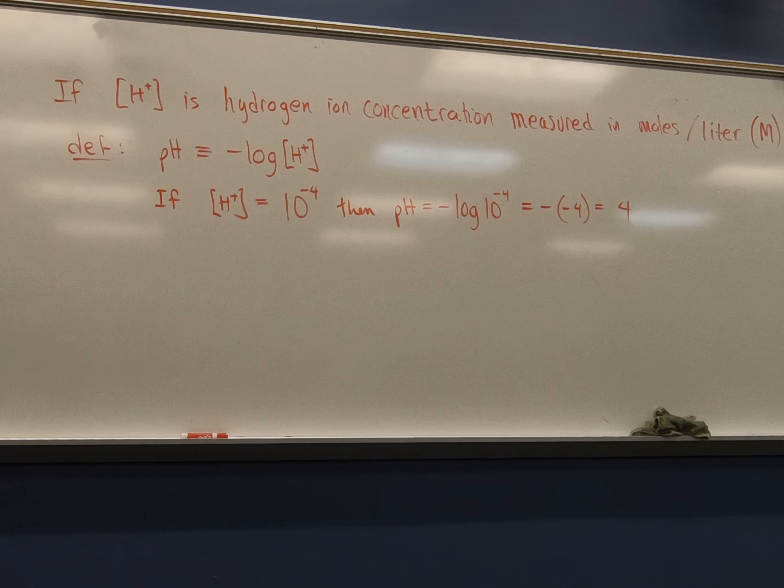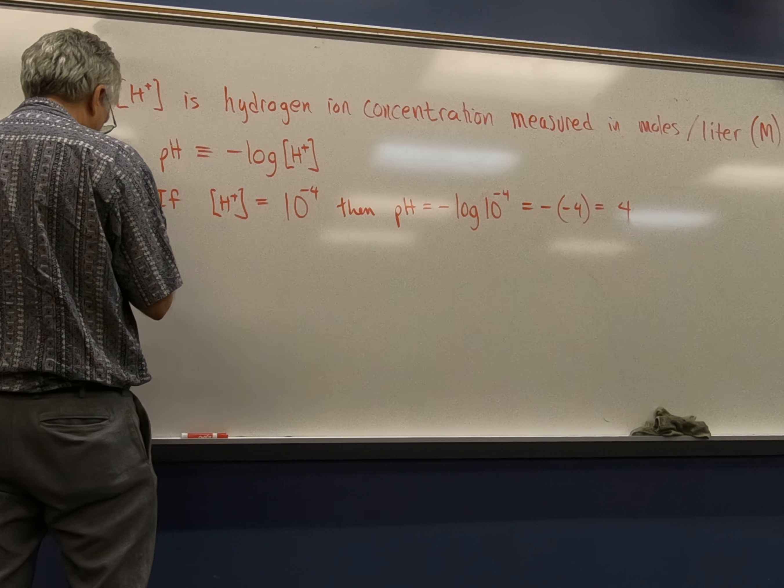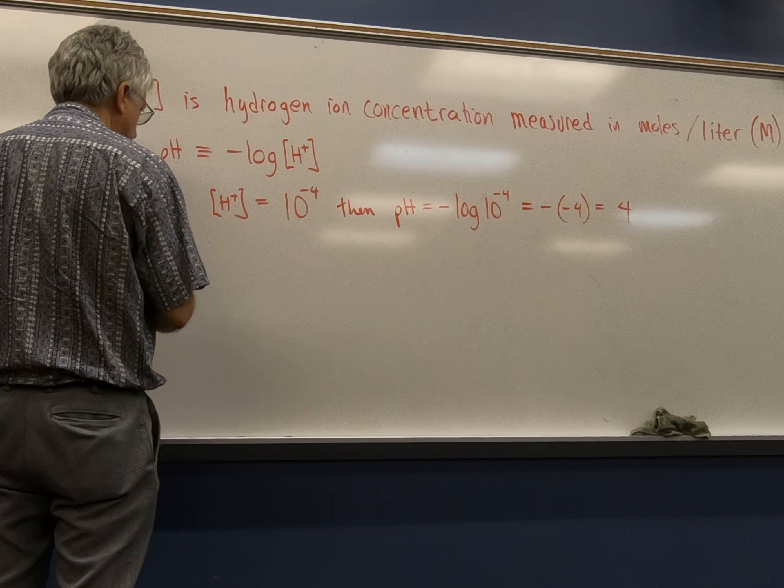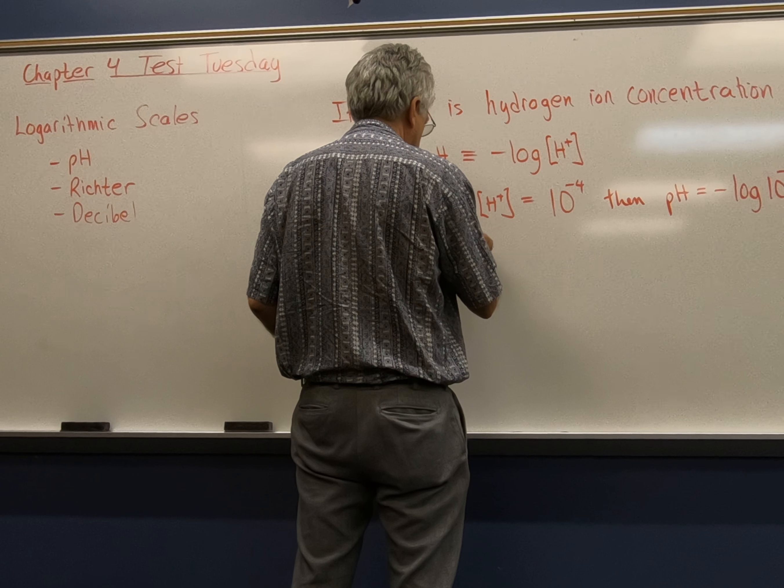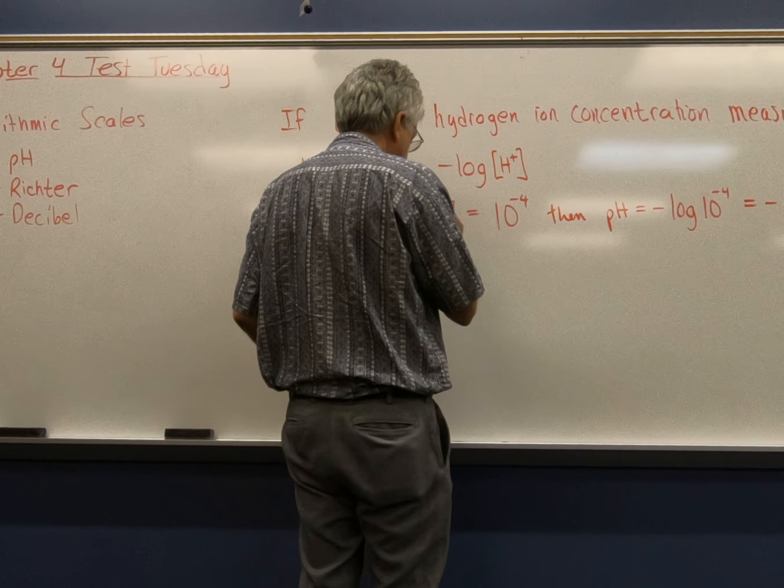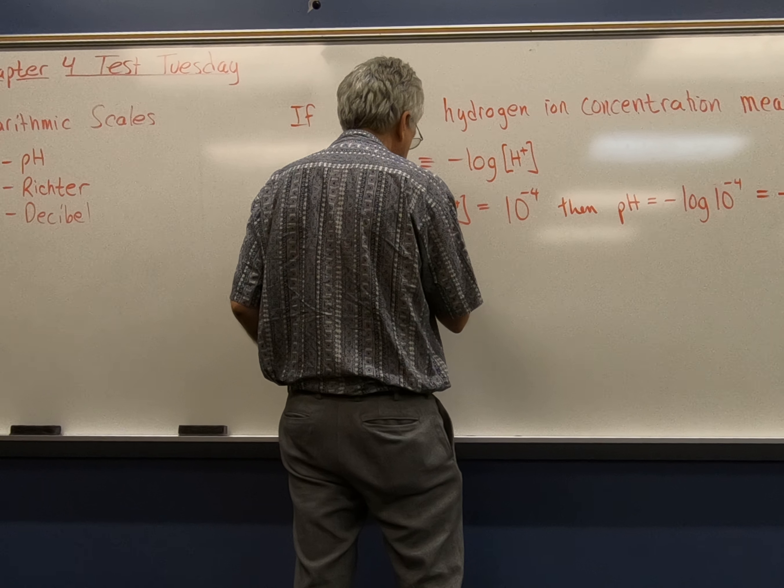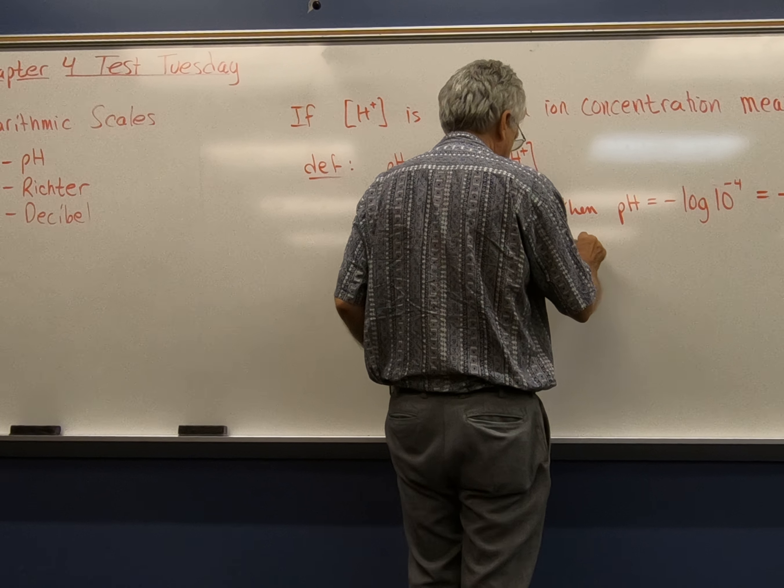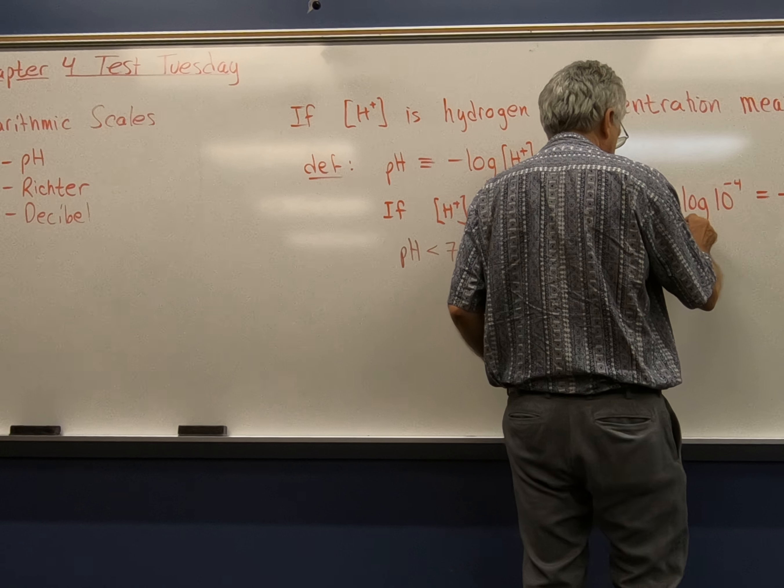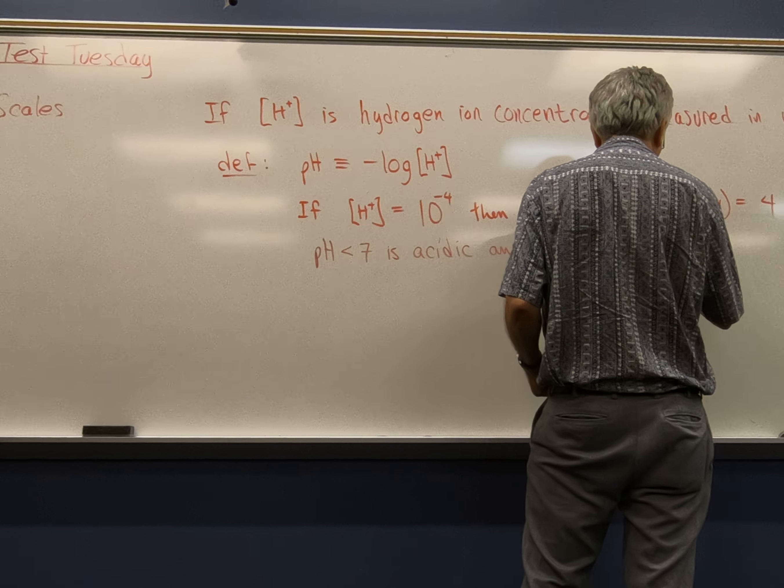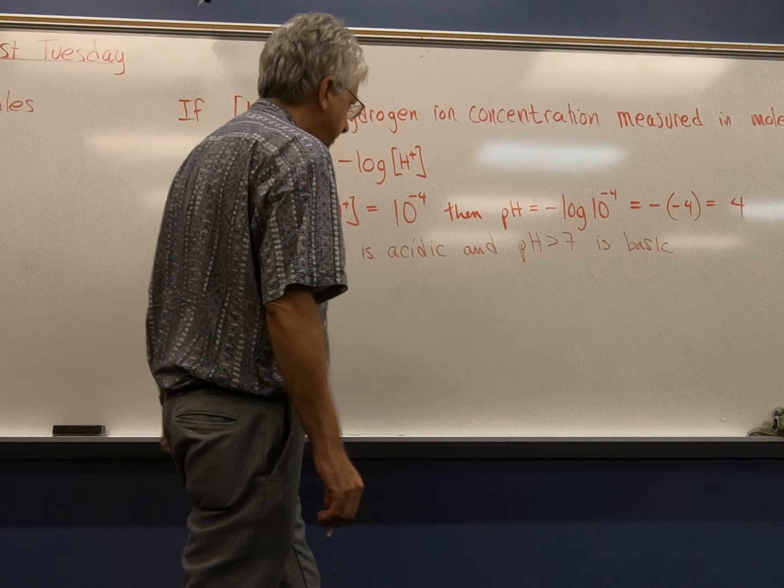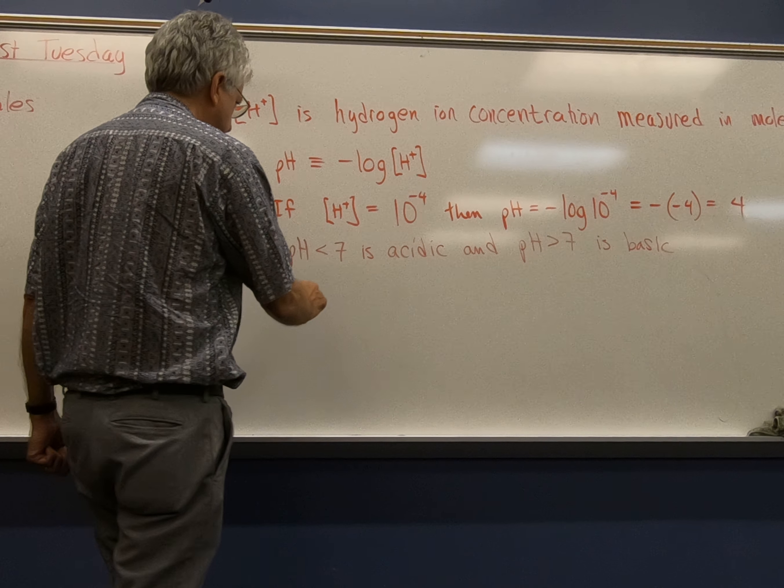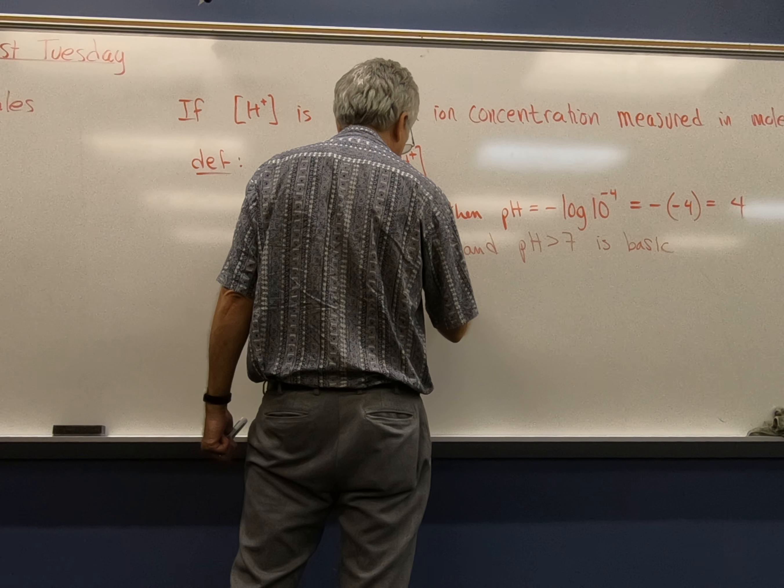How about the Richter scale? Oh, I should say pH greater than seven, or less than seven is acidic, is that right? Yes. And pH greater than seven is basic. And pH equal to seven is neutral.